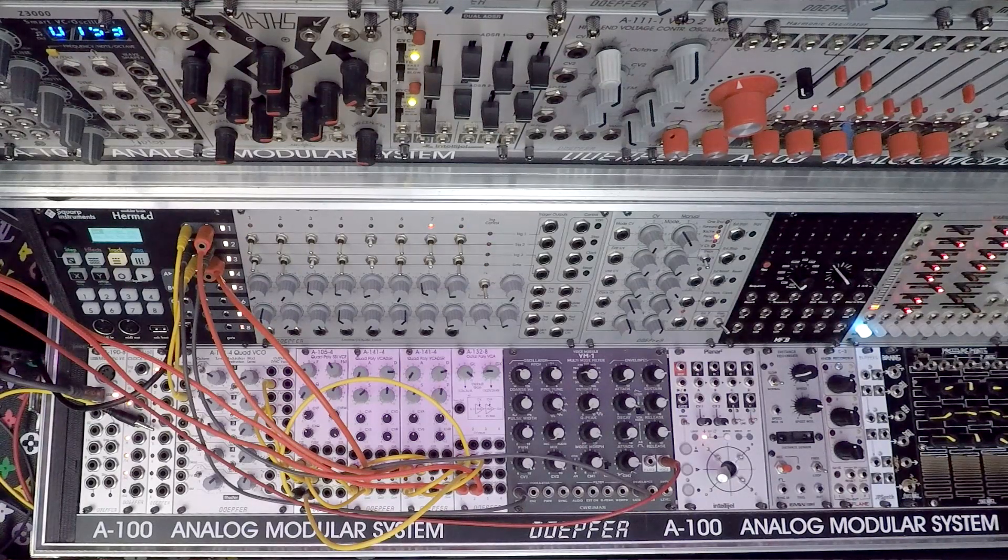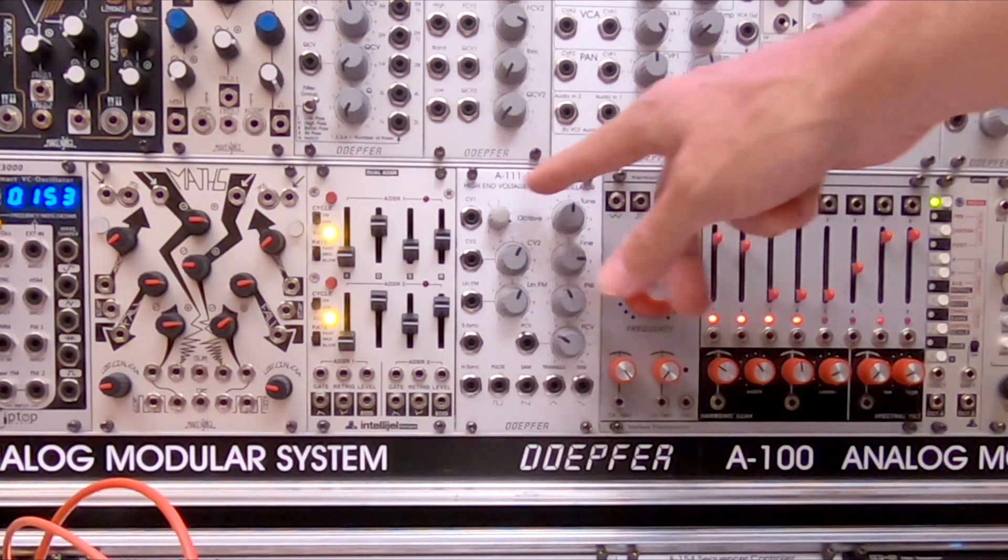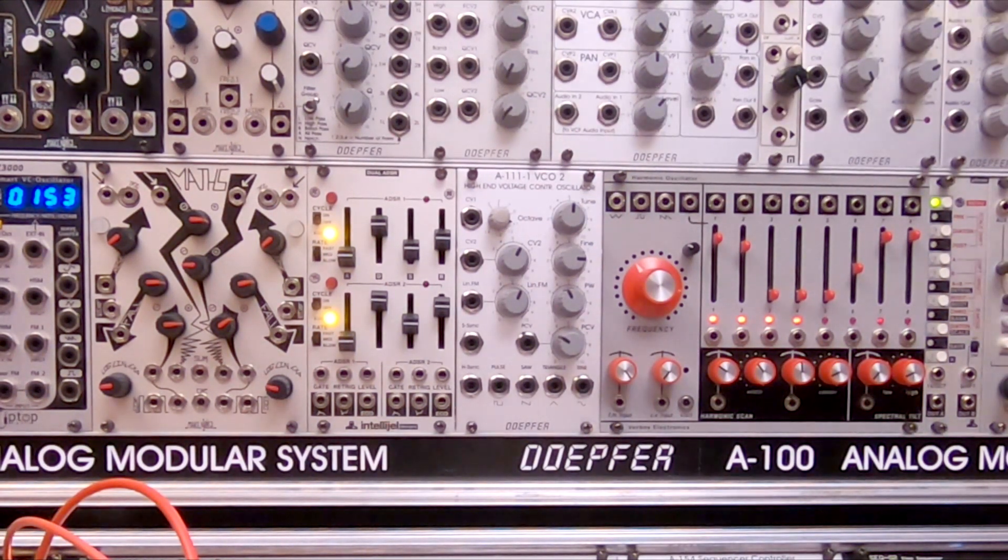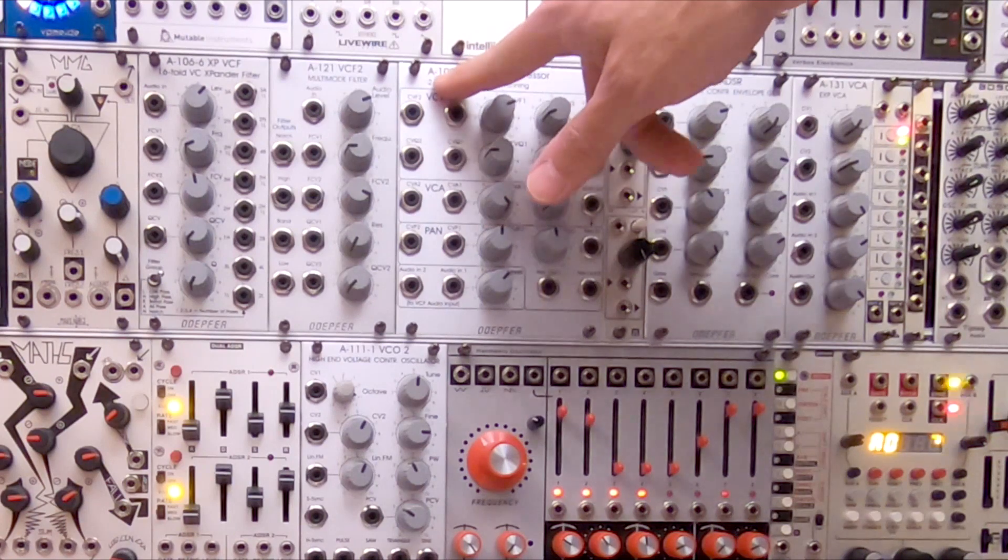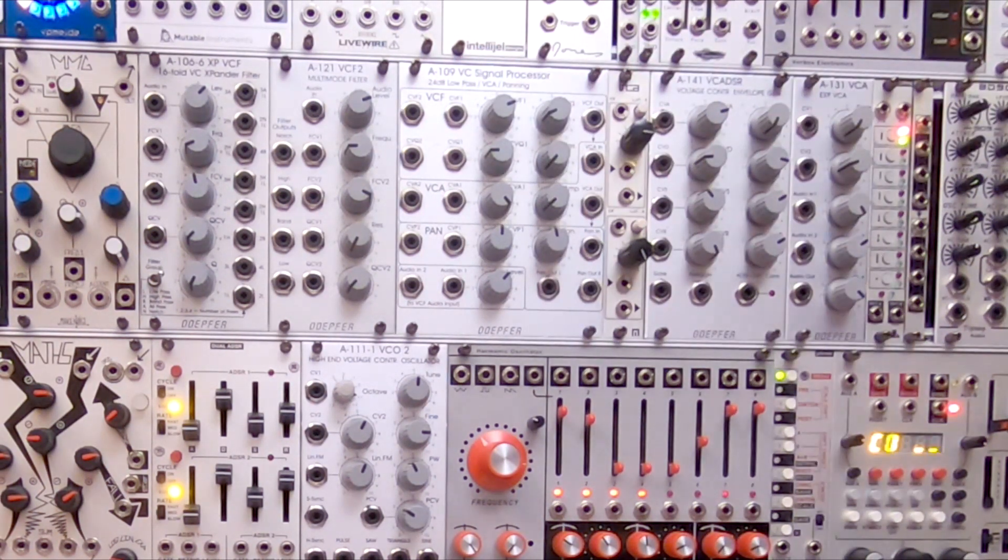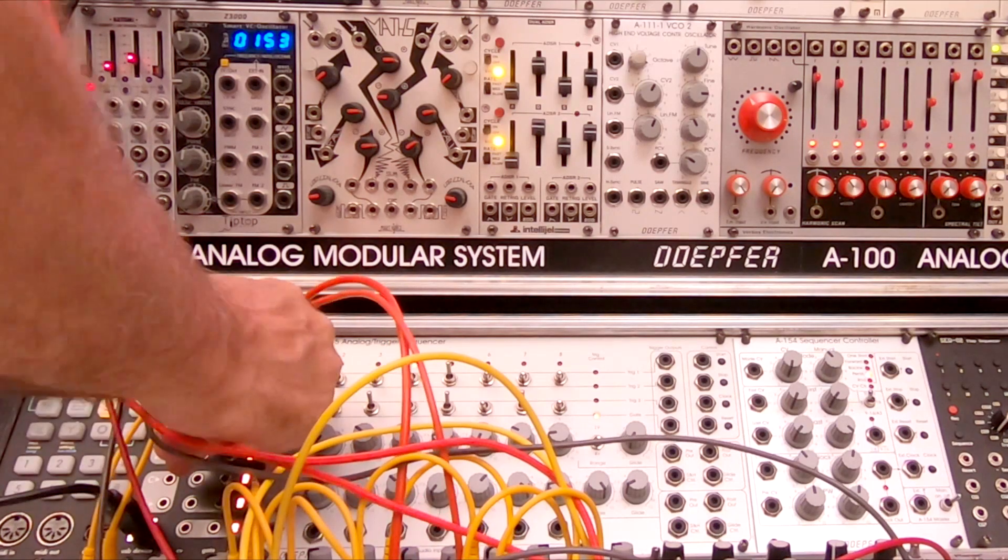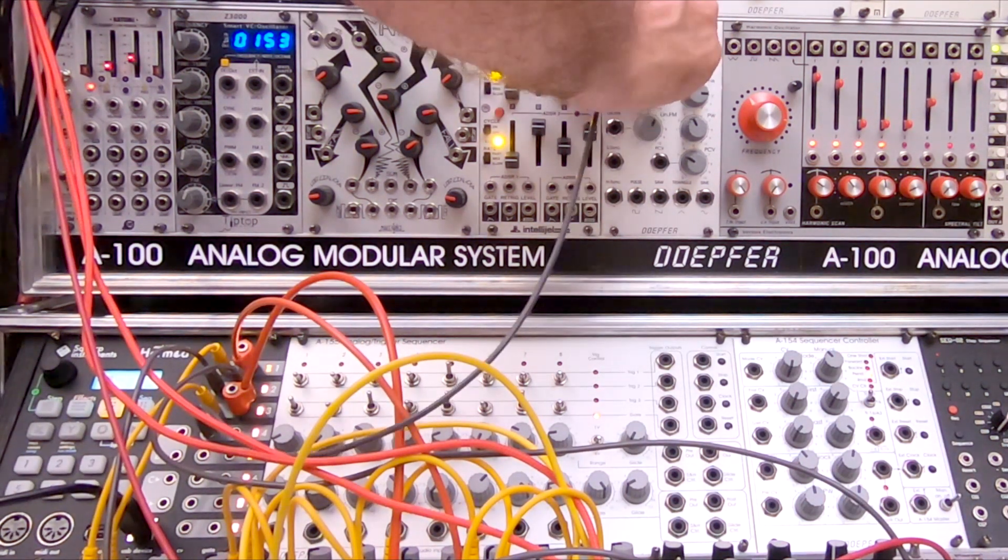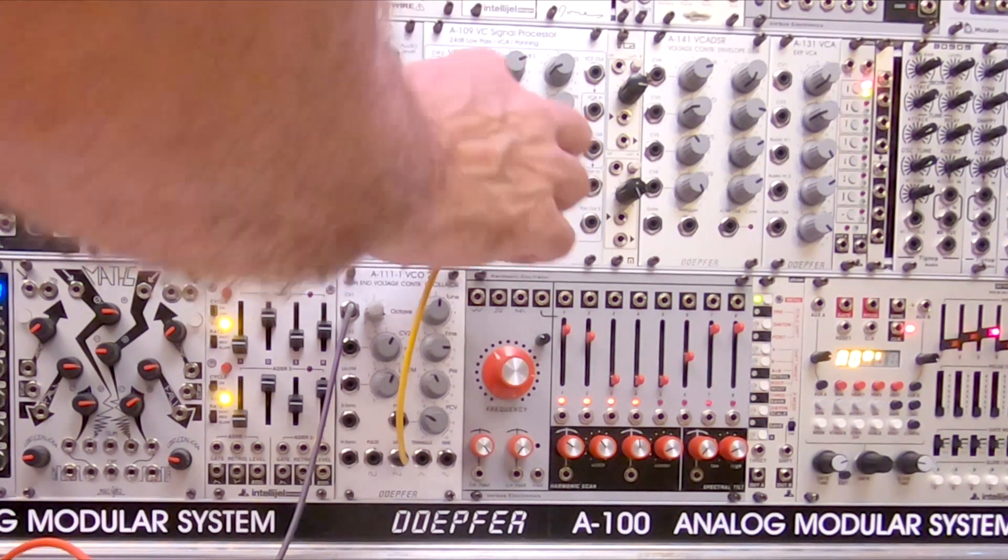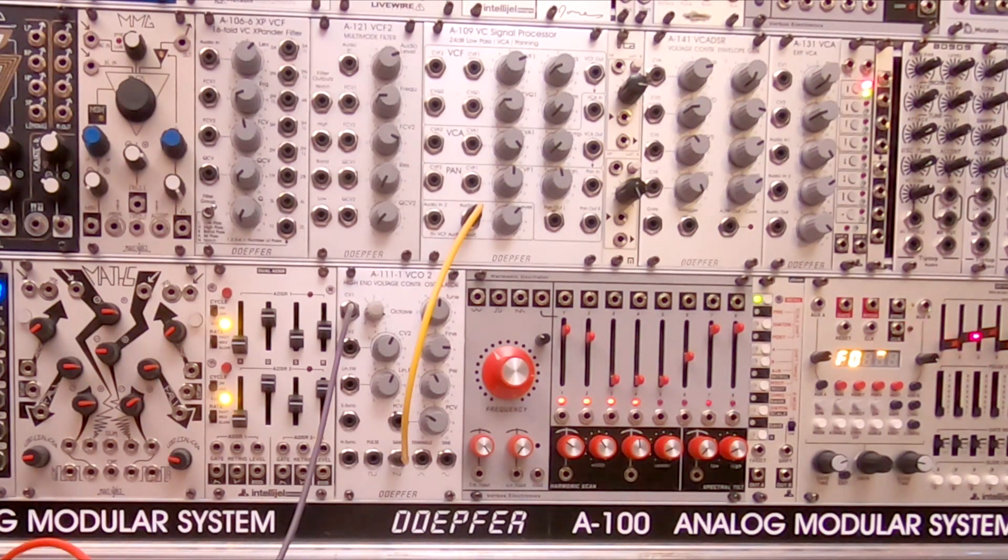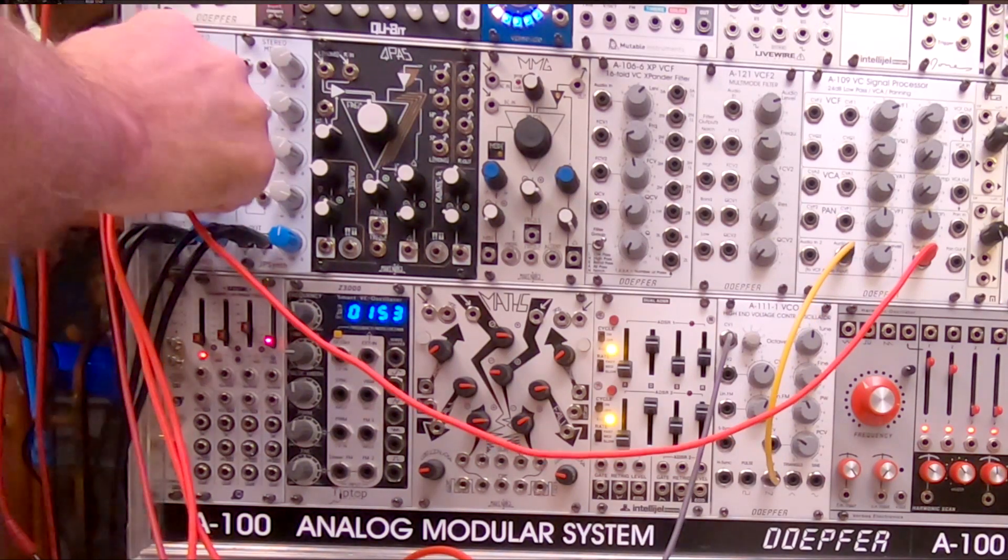Okay, voice number 4. I'm going to use the high-end voltage controlled oscillator, the A111-2 VCO from Doepfer. And I'm going to use the dual ADSR from Intellijel. And this combo here, the A109. It's a VC signal processor, which is actually a VCF, a VCA, and a panning module all in one. I take the CV out of voice number 4 into the CV volt per octave of the A111. I'm going to take the SAW out into the input here, which is going then into the VCF. The VCF is normaled into a VCA. The output straight into voice number 4.